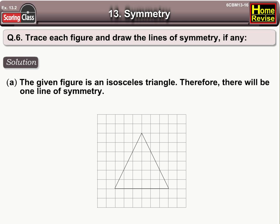Solution A. The given figure is an isosceles triangle. Therefore, there will be one line of symmetry and it is this.